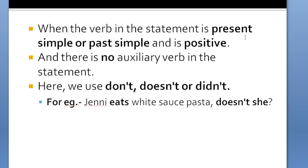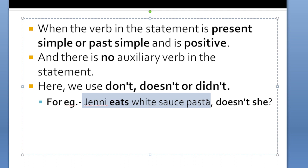Additional information: when the verb in the statement is present simple or past simple, positive, and there is no auxiliary verb, for Verb 1 (base form) we use 'don't,' for Verb 5 (third-person singular) we use 'doesn't,' and for Verb 2 (past simple) we use 'didn't.' For example: 'Jenny eats white sauce pasta, doesn't she?' The statement is affirmative and uses Verb 5, so 'doesn't she' is correct.